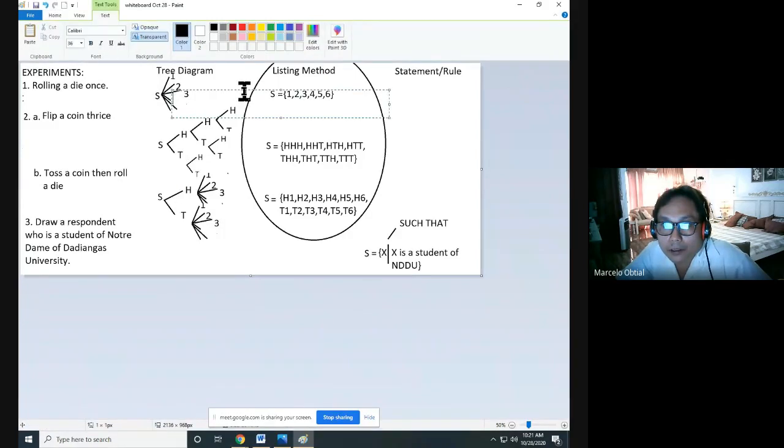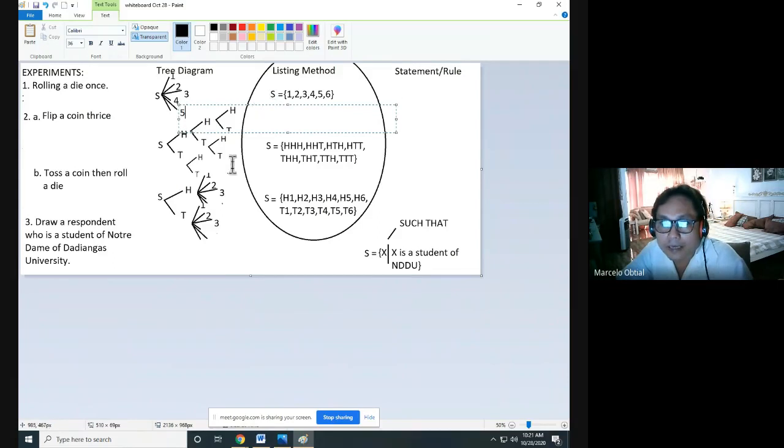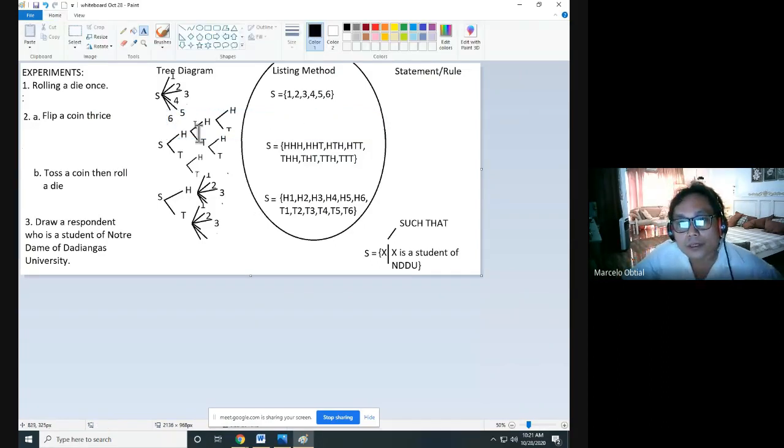In listing method, you just need to list down. You start always with writing capital S, then equal sign, then open brace, then one, two, three, four, five, six, then close brace. Next, we are done with experiment number one.